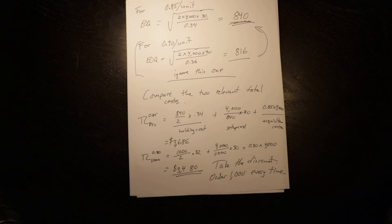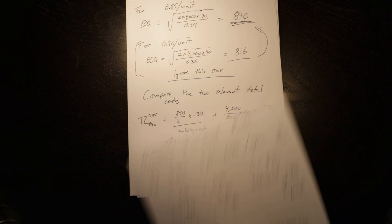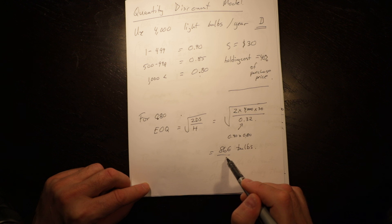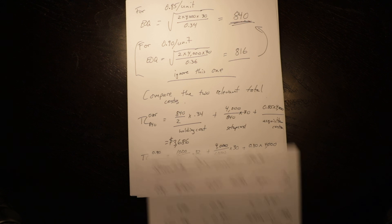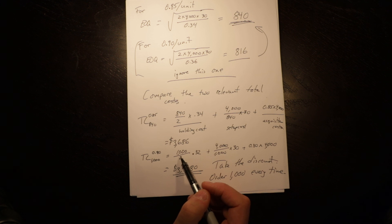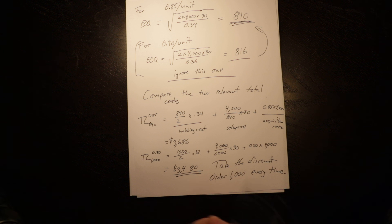For the one where the economic order quantity did not meet the threshold—866 was below that threshold—you then calculate the total cost at the minimum level to get the discount. In this case, it made more sense to take the discount and order a thousand every time. Relatively straightforward; you just need to go through the steps in the right order. Good luck.